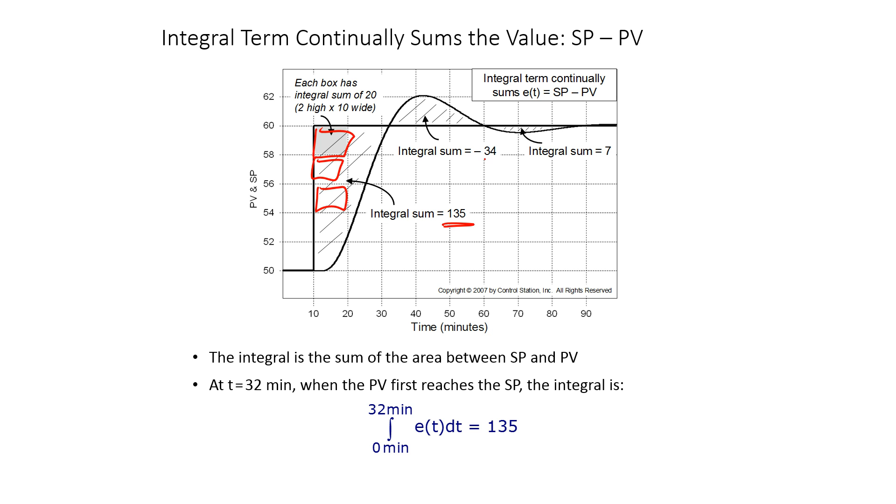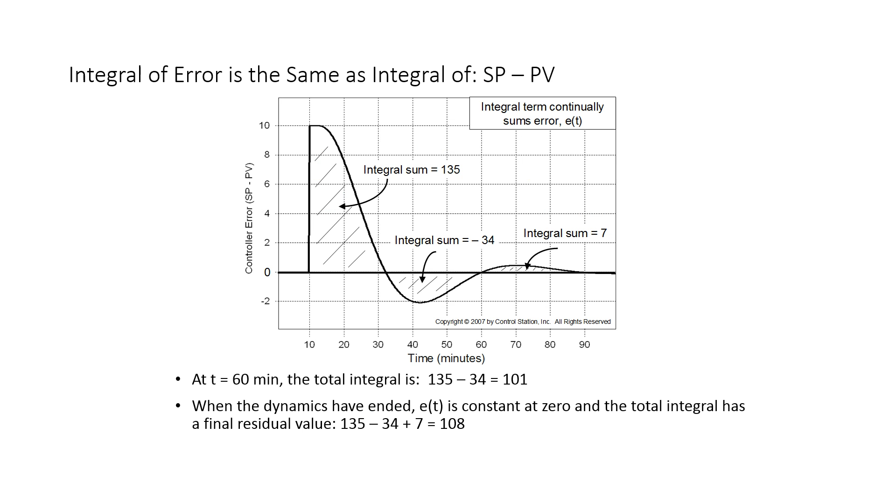Here you have an integral sum of 135. There you have negative 34, and there you have 7. So by the time it stops accumulating the integral, you could just add all of those up. At this point, the integral would be 101, and then you're going to add 7 more. So at steady state, this integral term is going to steady out to be about 108.